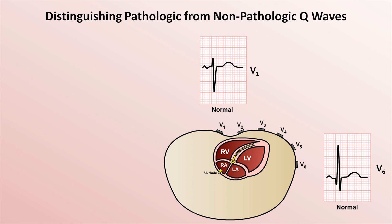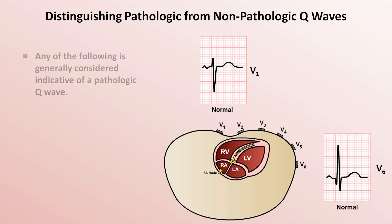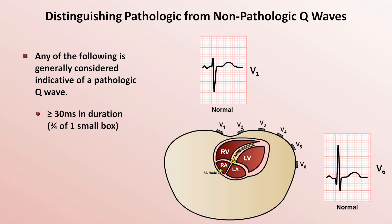If this is where a physiologic or septal Q-wave comes from, what is a pathologic Q-wave? The presence of a pathologic Q-wave is indicated by any of the following: a duration of 30 or more milliseconds, or a presence in leads V1, V2, or V3.